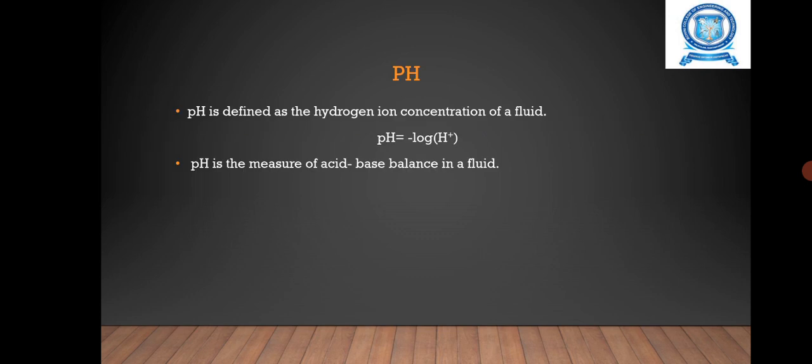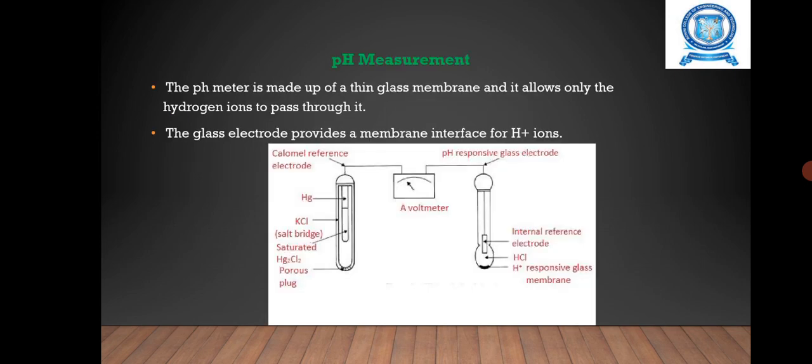First we are going to see pH. It is defined as the hydrogen ion concentration of a fluid. It is expressed logarithmically with negative exponent of the hydrogen ion concentration: pH = -log[H+]. It is the measure of acid-base balance in a fluid.